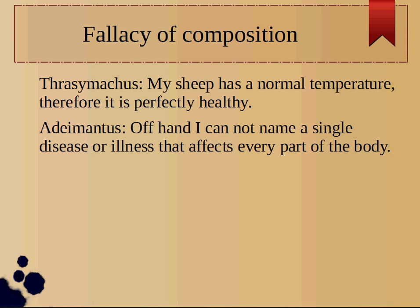In our second example, Thrasymachus notices that his sheep has a normal temperature, and therefore it must be perfectly healthy. Adamantus points out that offhand he cannot name a single disease or illness that affects every part of the body. So just because one part of his sheep is fine doesn't mean that the sheep is fine altogether — it may be a very sick sheep that just happens to have a normal temperature.